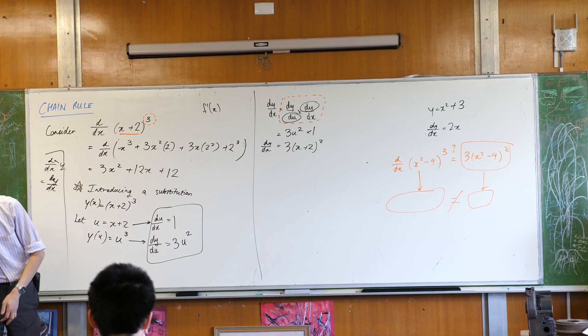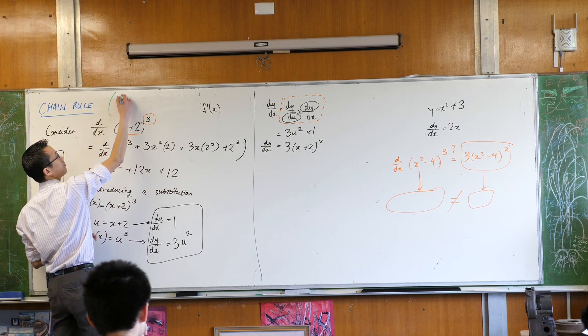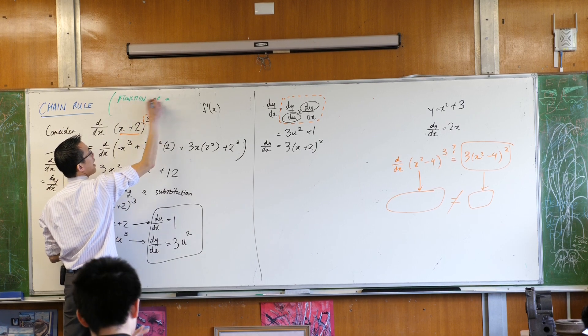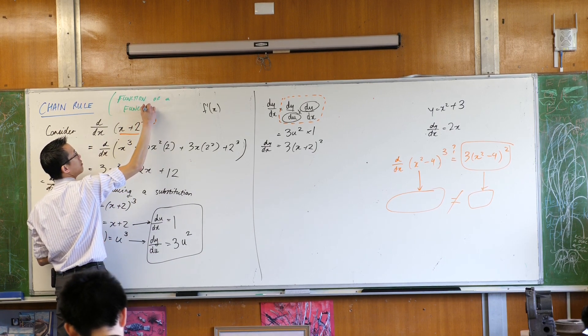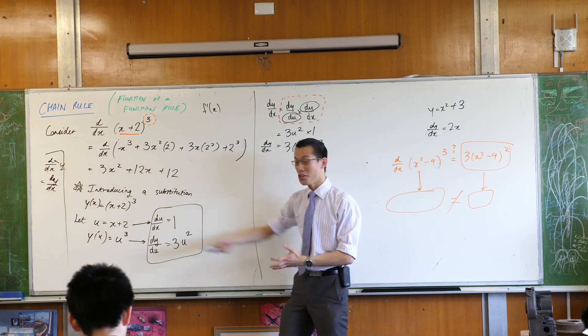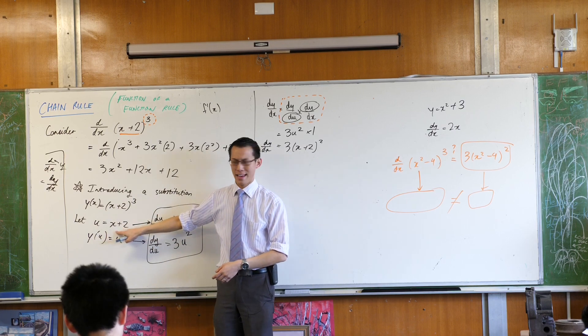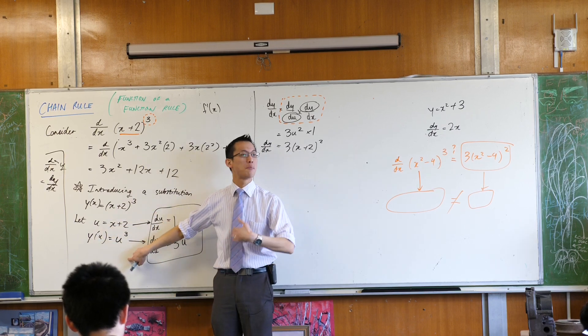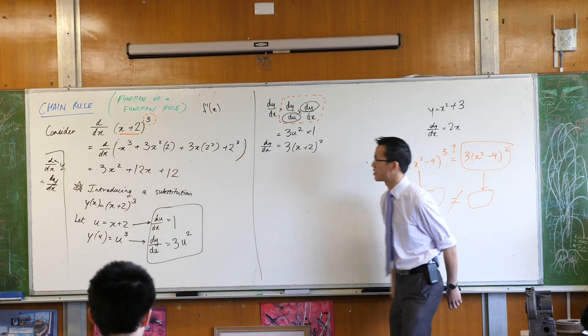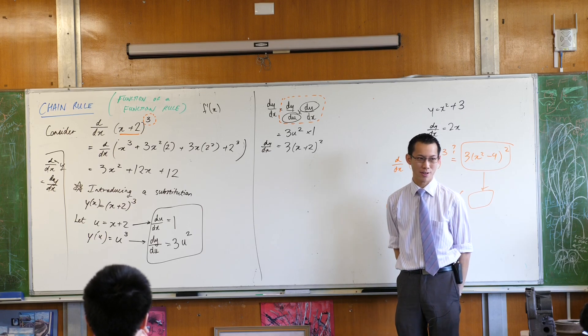It's also called, it's a bit more awkward, but it's a more descriptive name. In addition to chain rule, it's worth writing down, it's called the function of a function rule. Do you remember, I introduced u. I introduced a new function. And that function is having another function applied to it, that makes it a function of a function. But it doesn't quite roll off the tongue the same way as chain rule. So you'll hear me call it the first and not the second.